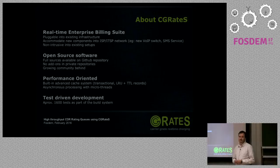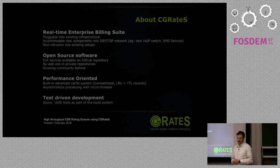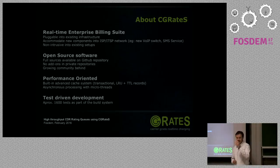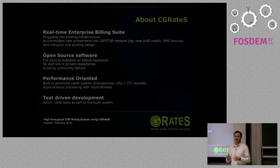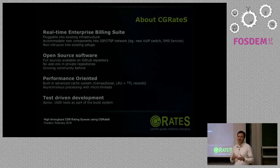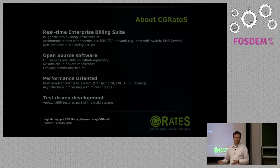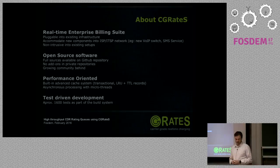We have a lot of components — it's a pluggable solution so you can integrate it into your infrastructure. It's designed to accommodate new components into an ISP network, for example adding a new VoIP switch or an SMS service and using CG Rates to help you build that. It's non-intrusive into existing setups — we don't interfere with your switch. We just share information and it's the responsibility of the switch administrator to take decisions based on that. The power is transferred to you — we don't ask you to route your traffic towards any specific environment.